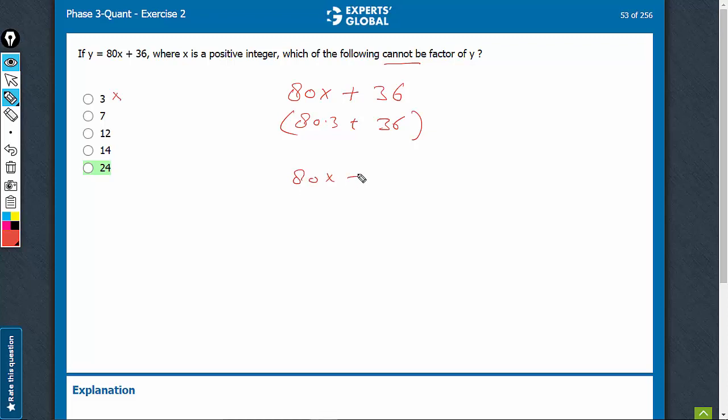80x + 36. Imagine when we divide this by 7, we will have 3x and 1 here. For some value of x, we will have 0 remainder. For example, if x is equal to 2, we will have 6 plus 1, 7 remainder, which practically means 0 remainder. So this can also be eliminated.